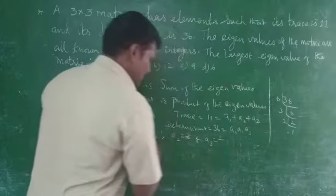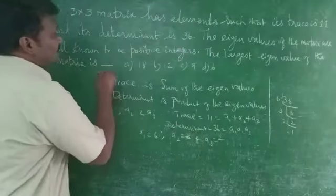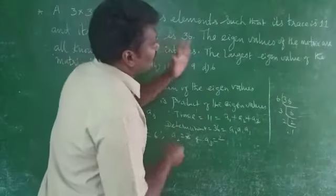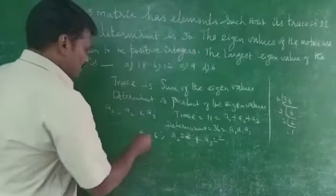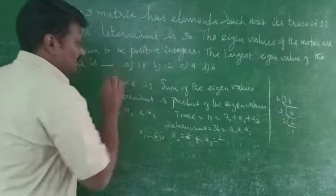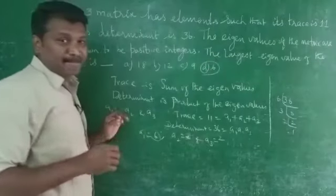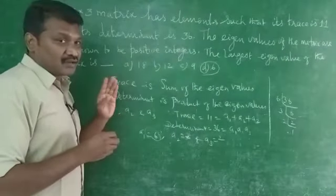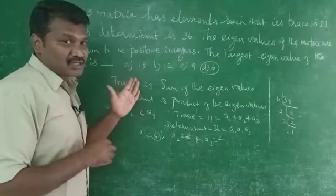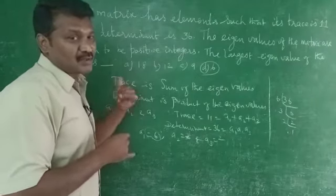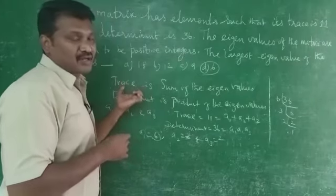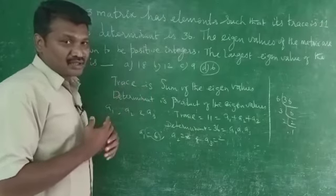So the 3 eigenvalues give us the largest eigenvalue of 6, so the correct option is D. This is easy - trace is the sum of the eigenvalues, and determinant is the product of the eigenvalues.